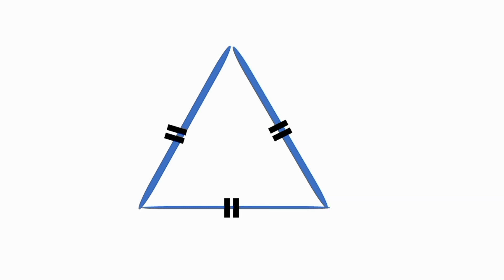Because all sides are equal, an equilateral triangle is also equiangular, meaning that all three angles are equal.